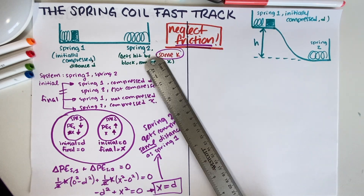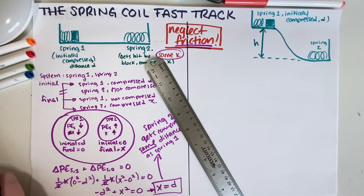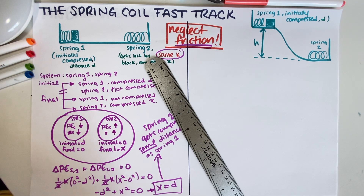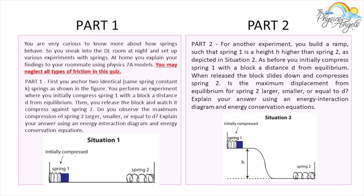Now let's do the second part. In another experiment, you build a ramp such that spring one is at a height h higher than spring two, as depicted in situation two. As before, you compress spring one with a block a distance d from equilibrium. When released, the block slides down and compresses spring two. Is the maximum displacement larger, smaller, or equal to d?